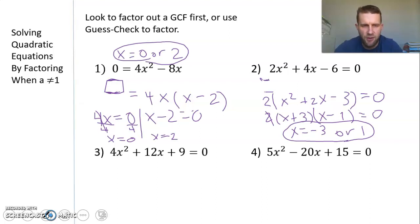Looking at number 3, we have 4x² + 12x + 9 = 0. There's no GCF now, unlike the first two examples. We want to set up and do our guess-check method with two parentheses equal to 0. Link inner, link outer, target a positive 12x.